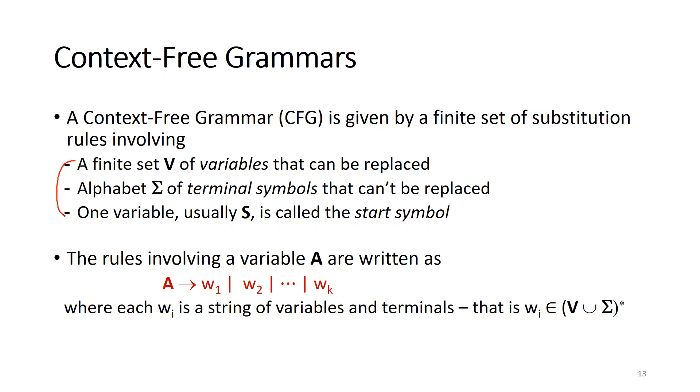One variable, usually S, is called the start symbol. The rules involving A are written as this, where each wi is a string of variables and terminals. Context-free grammars can describe any kind of language, but we're not going to cover this in this class.